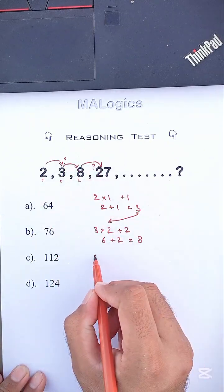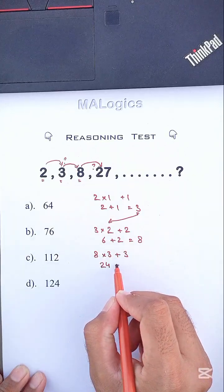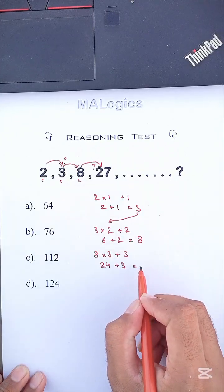Easy, right? Now, this 8 times 3 plus 3. Here, 8 times 3 equals 24. Now, 24 plus 3 equals 27.